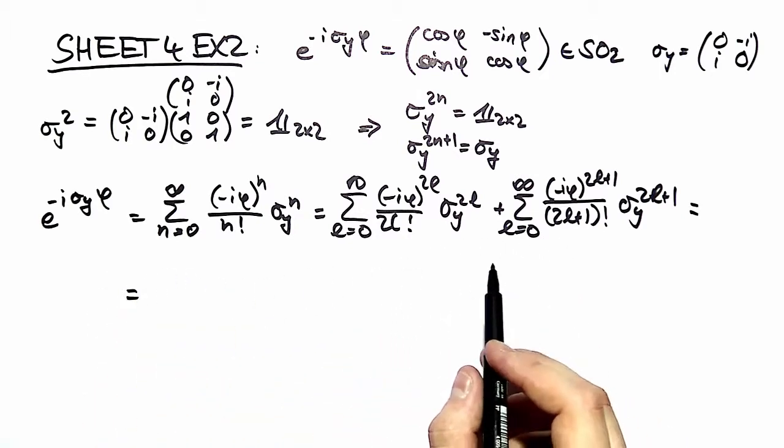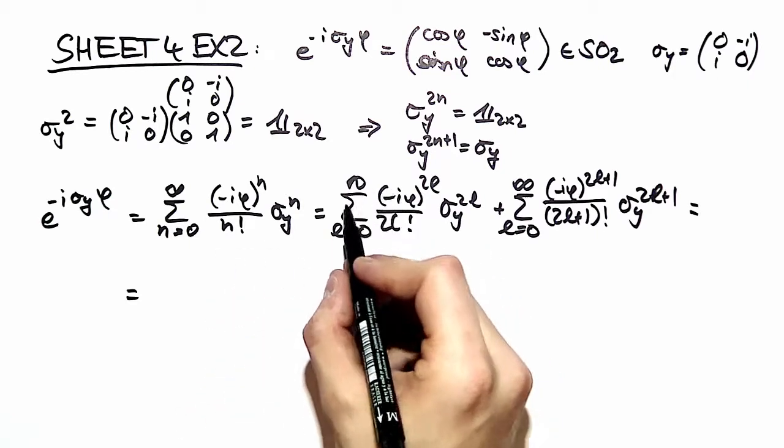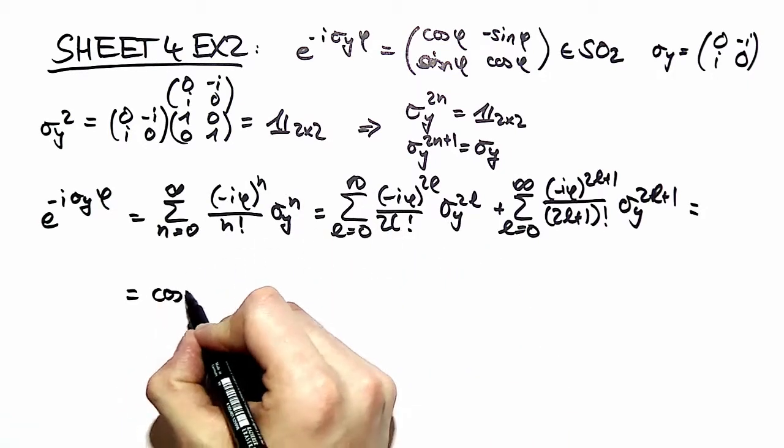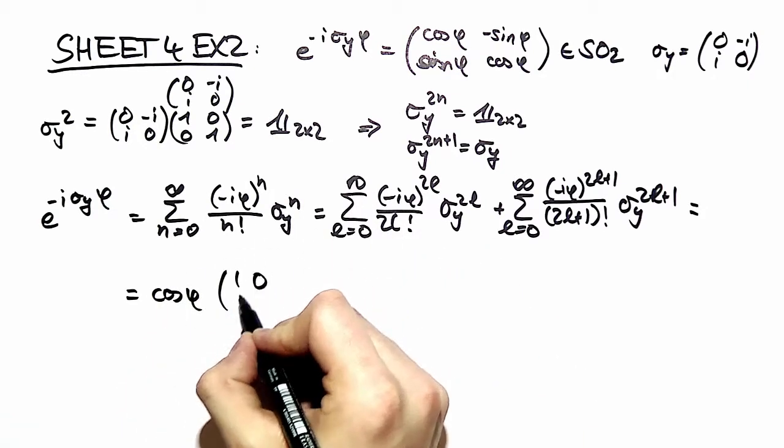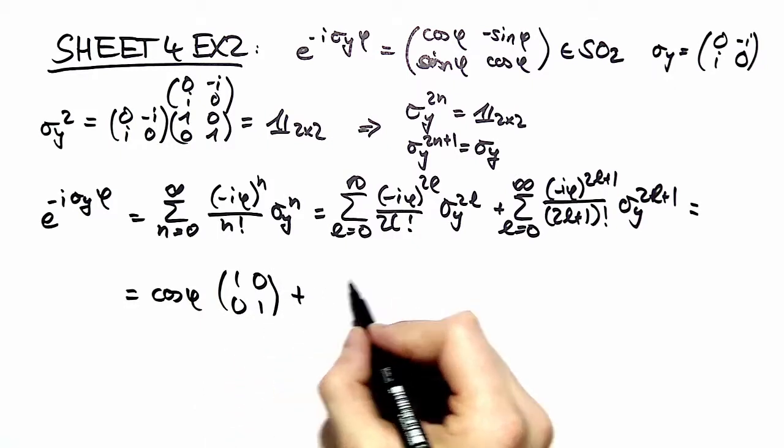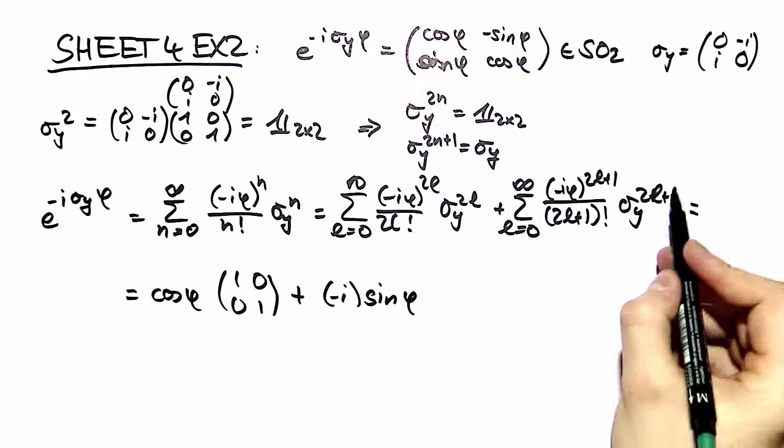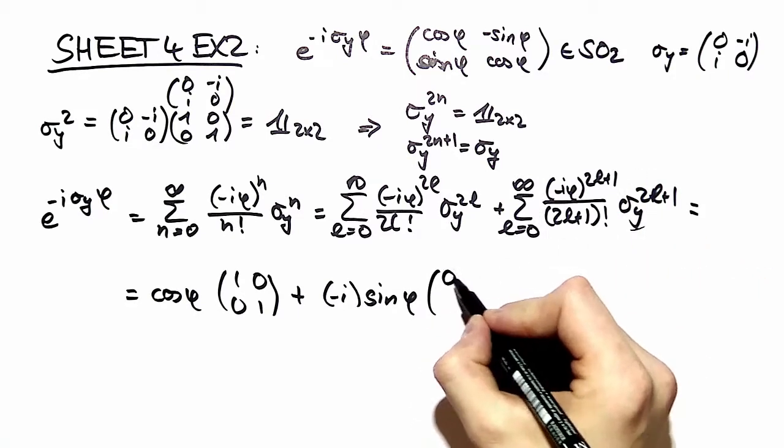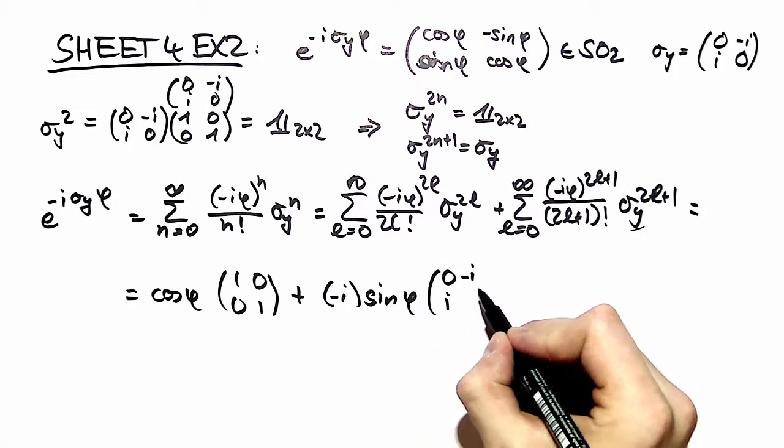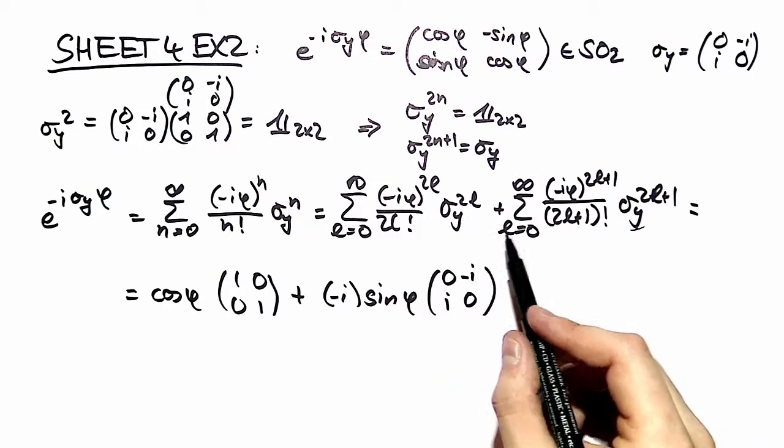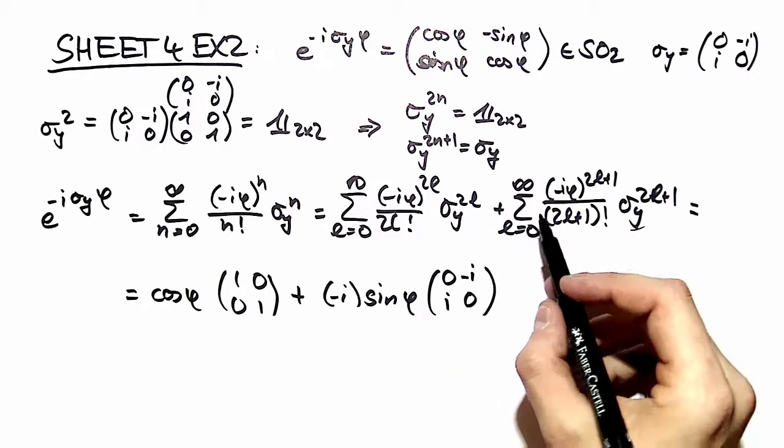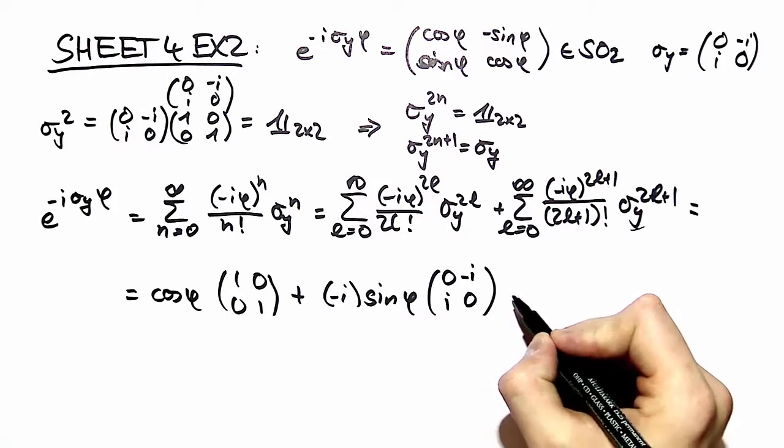So we can rewrite our expressions. Here we have cosine of phi times the identity matrix plus minus i times sine phi times our sigma y matrix. We can extract that out of the sum and then we have here minus i times sine phi.